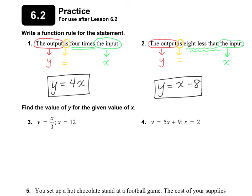Let's take a look at numbers 3 and 4. Numbers 3 and 4 say to find the value of y for the given value of x. So here we're given an equation of a function, and what we need to do is take the value they're given — this is my independent variable — and substitute it in for the x. So that means we're going to rewrite the problem. But instead of x, we're going to substitute in what x is. They want x to be 12. Simplify this: 12 divided by 3 is 4. So that is our answer for number 3.